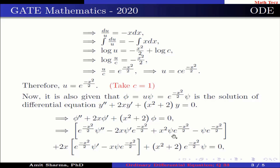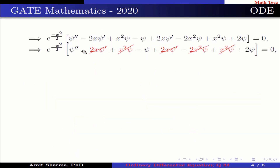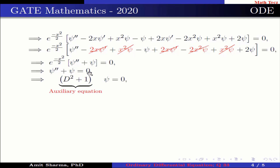This is further written by substituting the values of φ'', φ', and φ into the equation, which simplifies to e^(−x²/2)·(ψ'' + ψ) = 0. Since e^(−x²/2) cannot equal 0, this implies ψ'' + ψ = 0, which is written as (D² + 1)ψ = 0, where D² + 1 is the auxiliary equation.